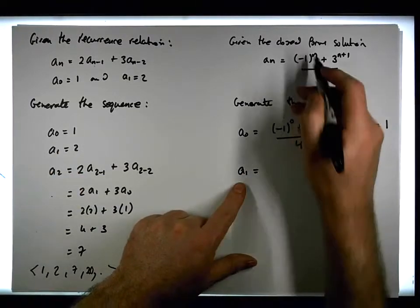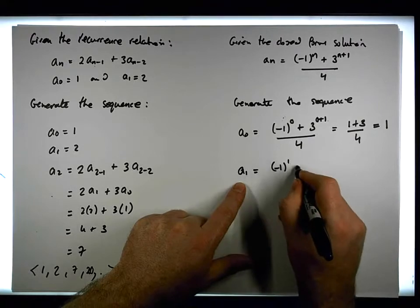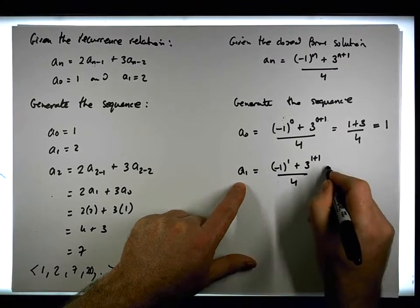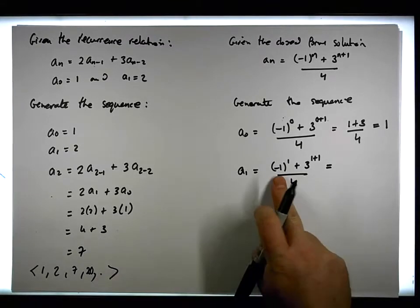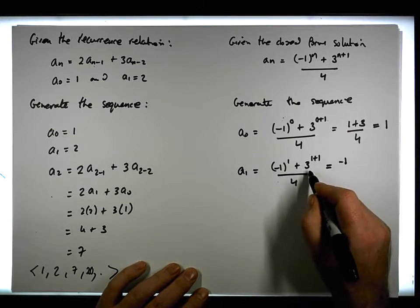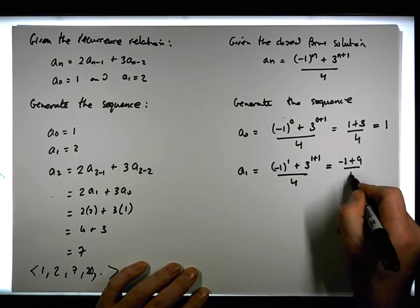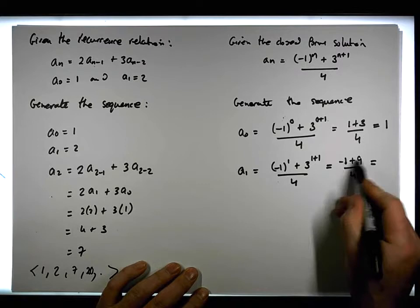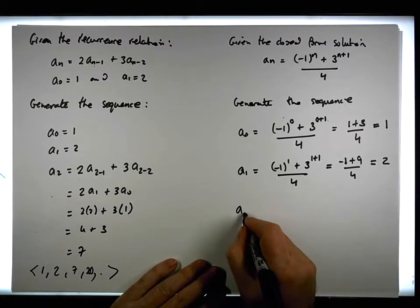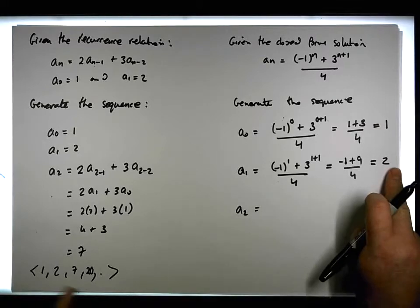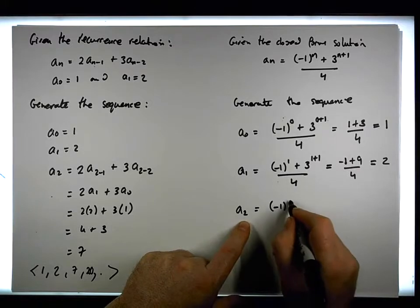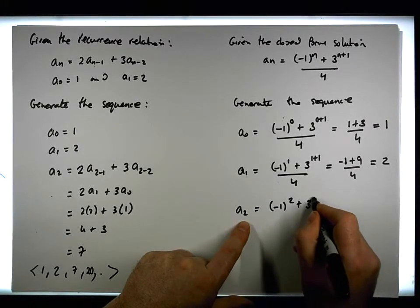What about a₁? a₁ is (-1)¹ plus 3^(1+1) all over 4. That gives us minus 1 plus 3², which is 9, over 4 — so minus 1 plus 9 over 4 is 8 over 4, which gives us 2. That's the second term. What about a₂? That gives us (-1)² plus 3^(2+1) all over 4.